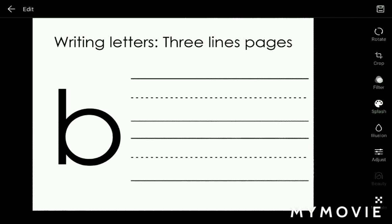When we write lowercase letter b on three lines, we start from the top line, the top dark line, and go straight down. Then up, then around and close it. Be careful it shouldn't be under the third line.